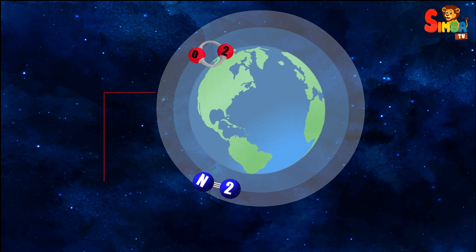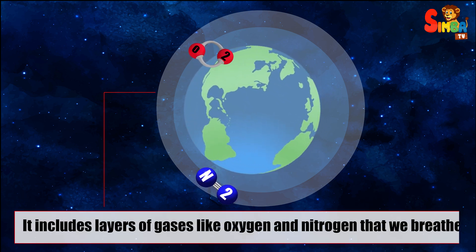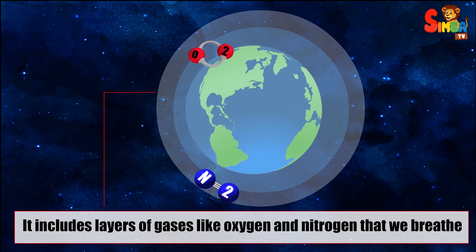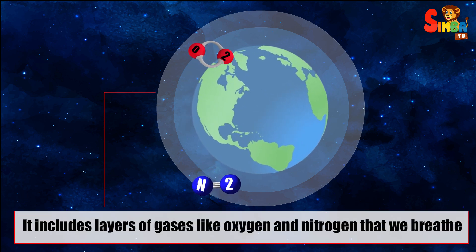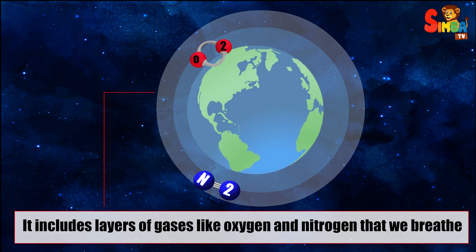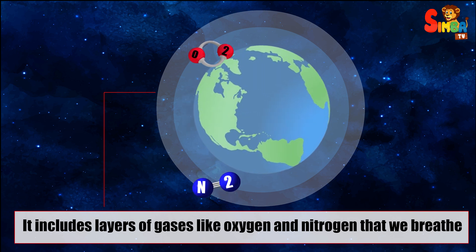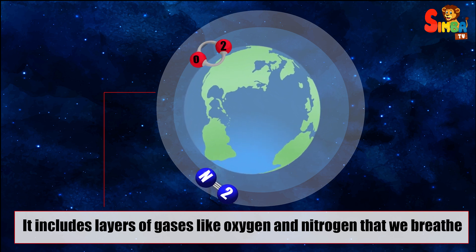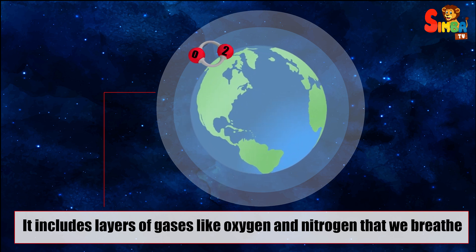Atmosphere: although not a part of the solid surface, the atmosphere surrounds the earth and is vital for life. It includes layers of gases like oxygen and nitrogen that we breathe.